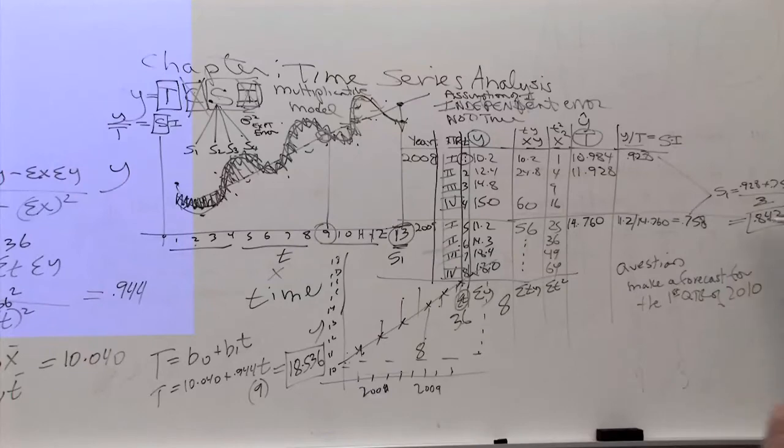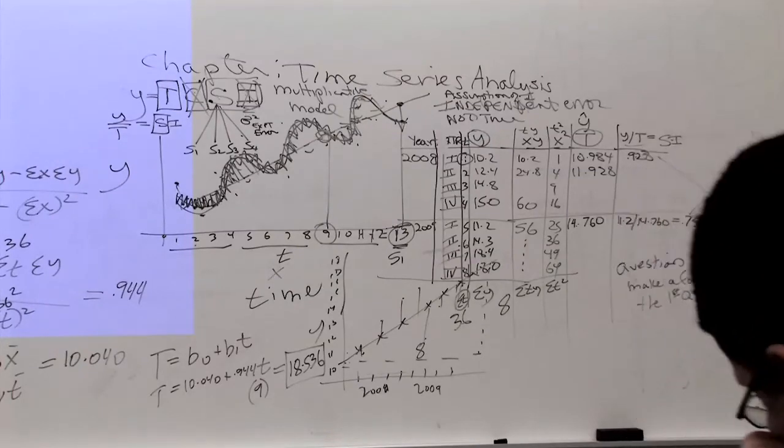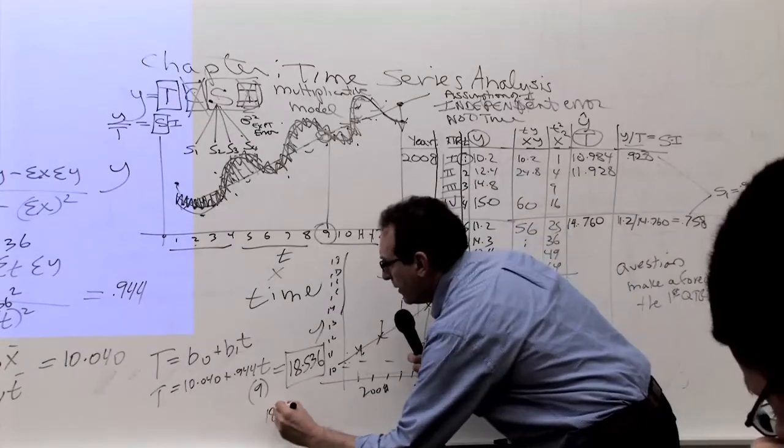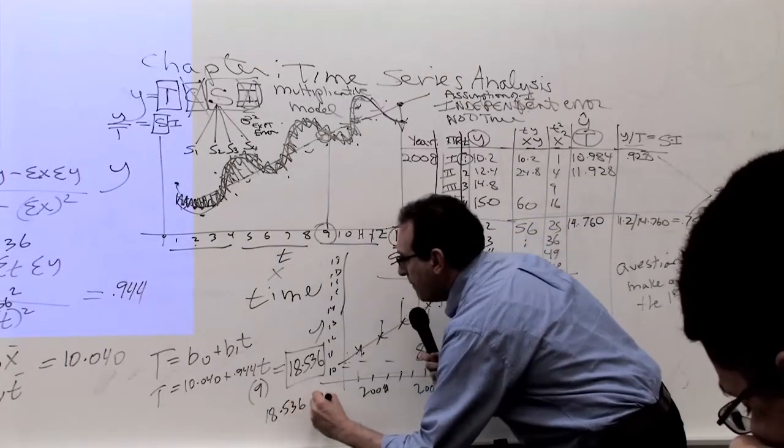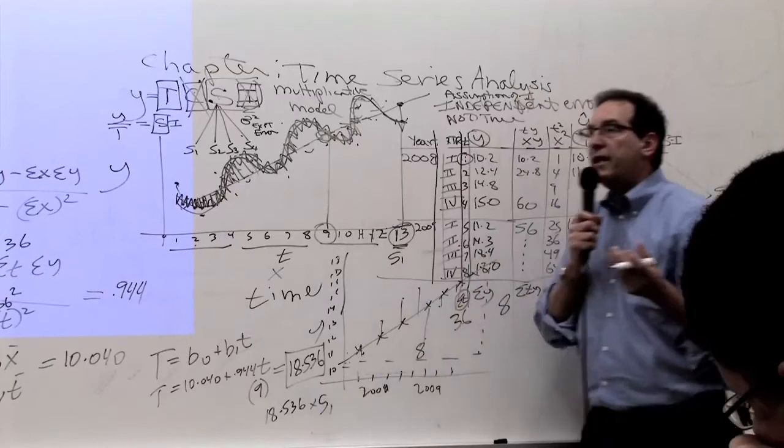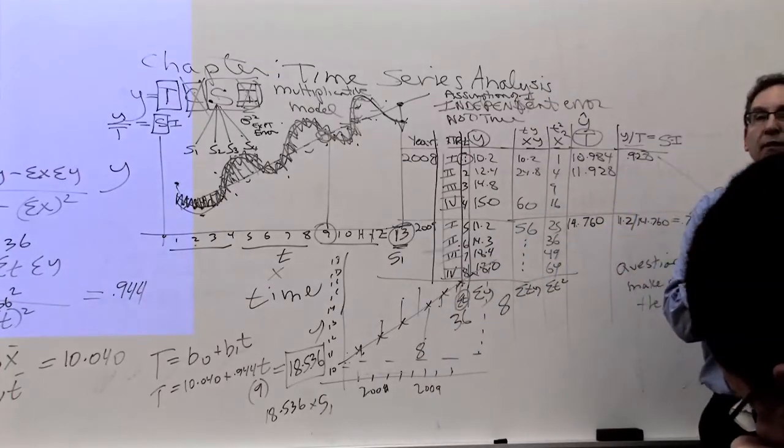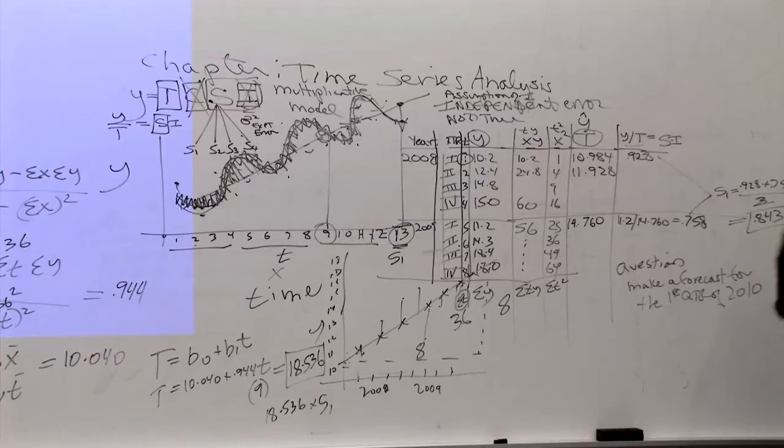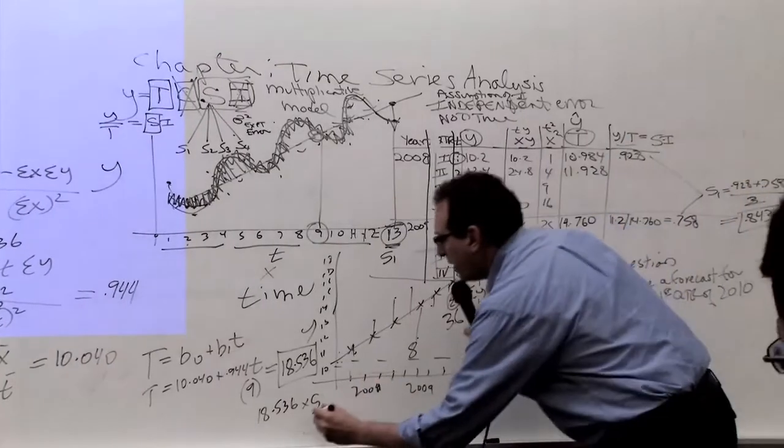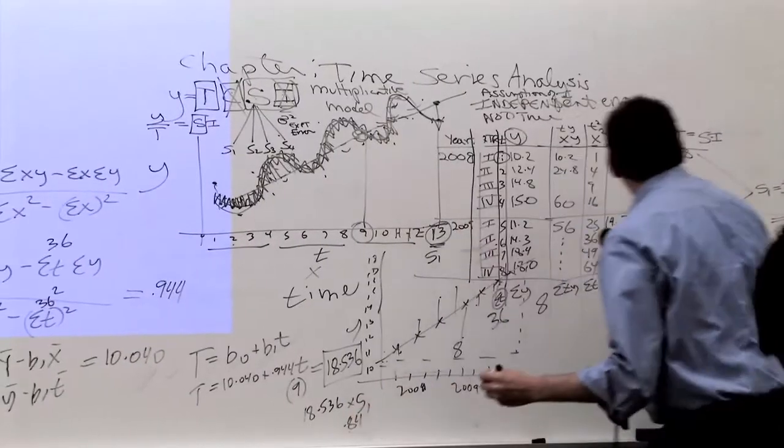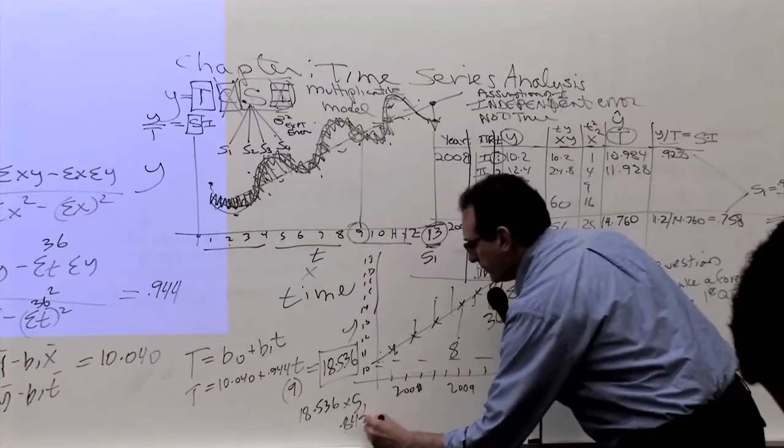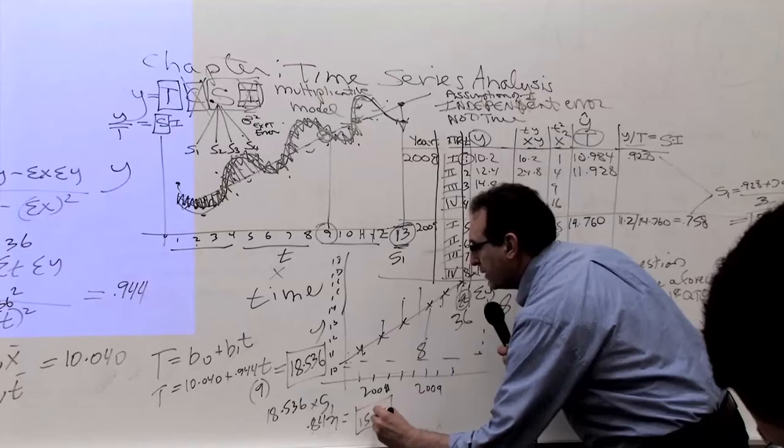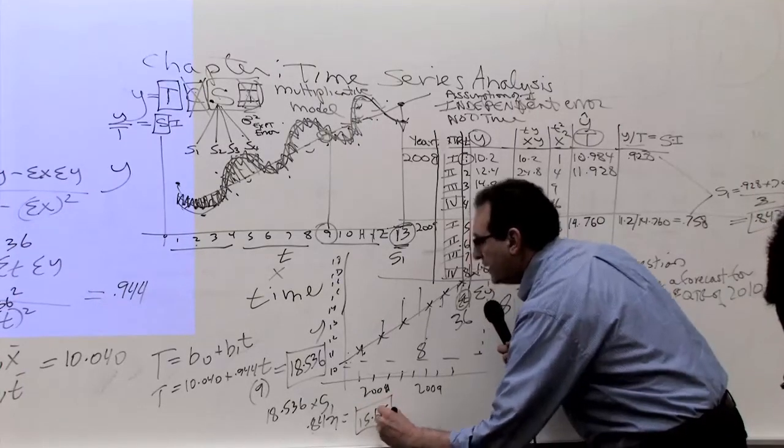How do you adjust it? It's very simple. You multiply. By multiplying by .843, you're chopping off 16% right there. So the next step is to take this number, 18.536, and multiply it by the S1. Why the S1? Because we're talking about the first quarter of the year. If you do this for the second quarter, you'd have to do the second quarter. So how much is 18.536 times .843? 15.625. And that's the answer to the question.